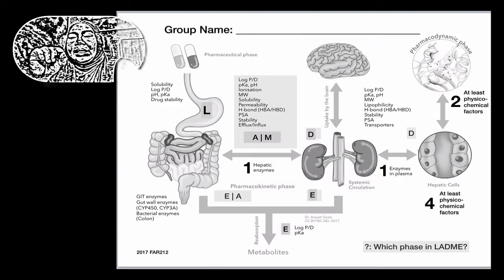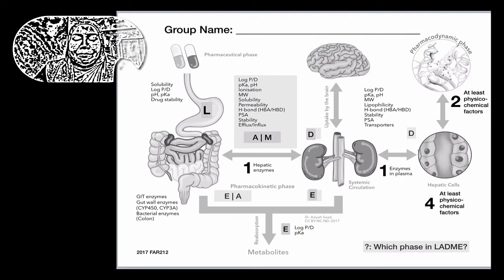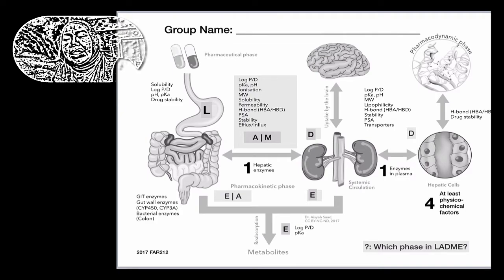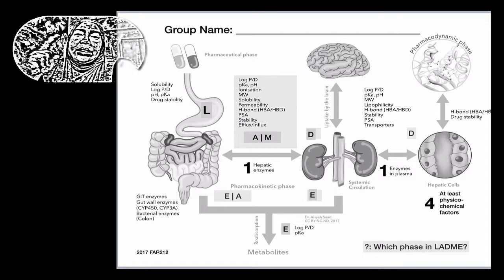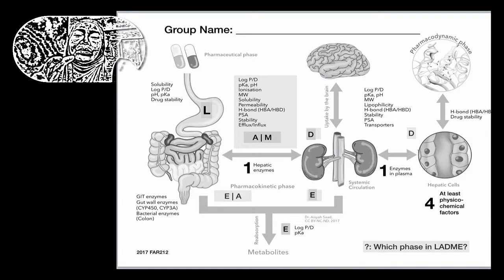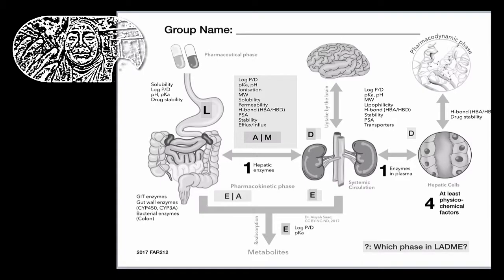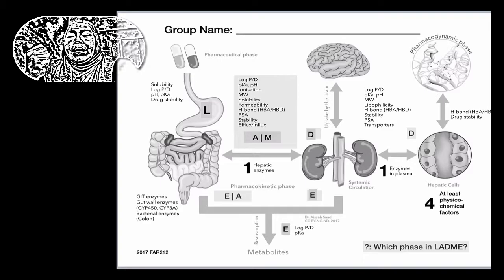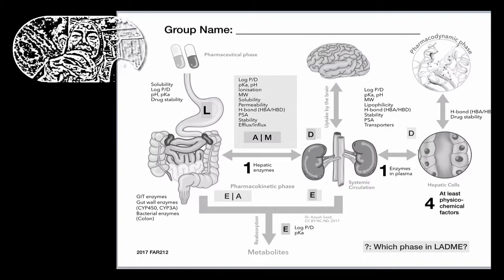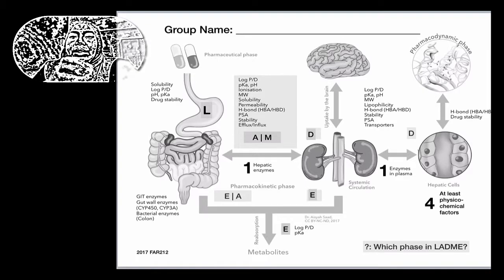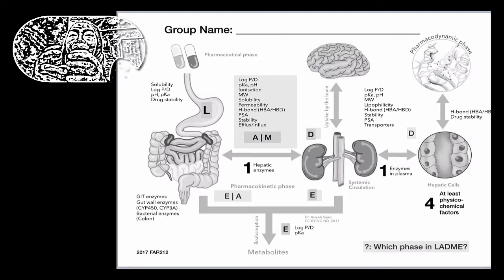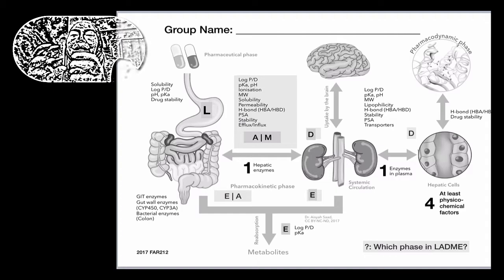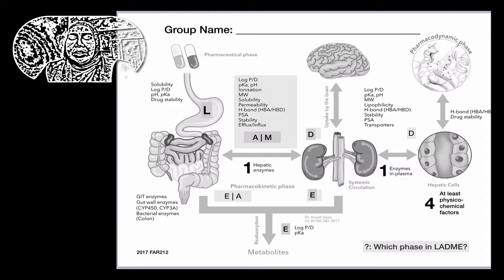The drug gets distributed in the whole system. If it does get to the target after crossing the liver and so on, at the target there are probably two factors: the drug-receptor or drug-target interaction usually involves hydrogen bonding, van der Waals forces, and also whether the drug is stable at the target. Some drugs interact with enzymes, and the enzyme can probably catalyze the drug way faster than its own substrate. So drug stability and interaction with the target is also a point of consideration.